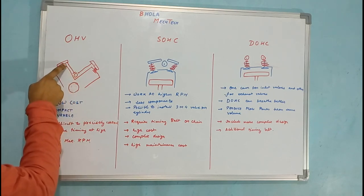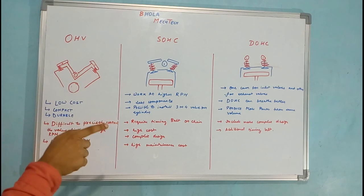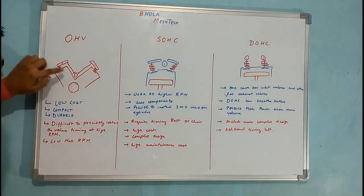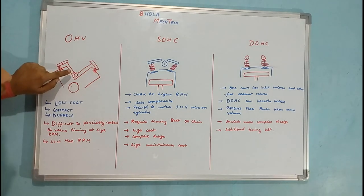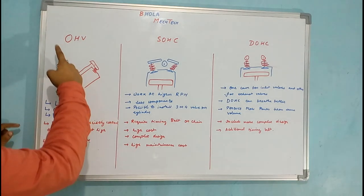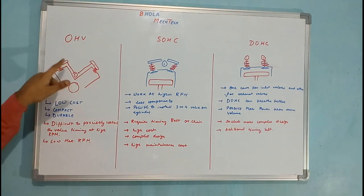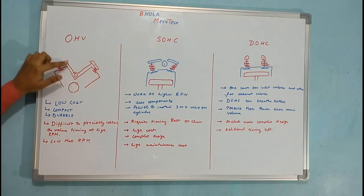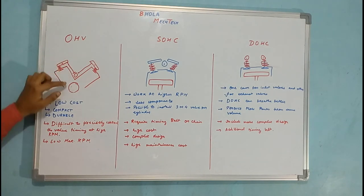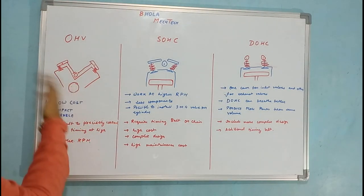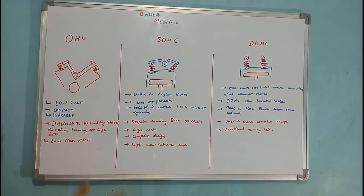The cam will rotate and due to the cam profile it will push the push rod. When the cam rotates it pushes the push rod, and the force applied on the push rod will travel through and exert force on the rocker arm. Since this is a cantilever dial assembly with a pivot point, the force at one end causes the opposite end to actuate the valve in the downward direction, due to which the valve opens and the exhaust or intake takes place.